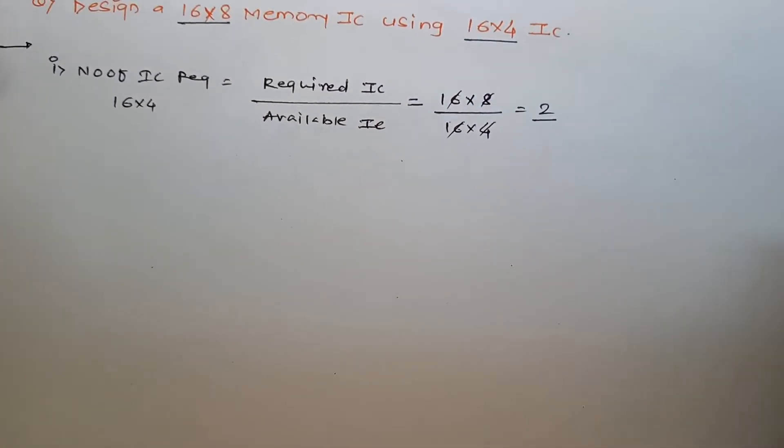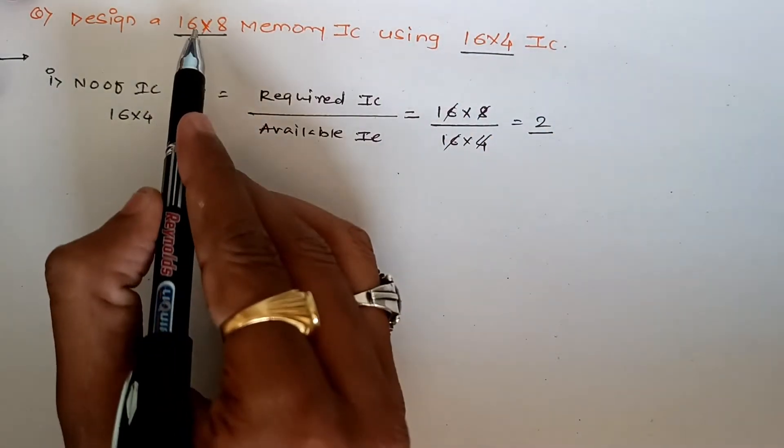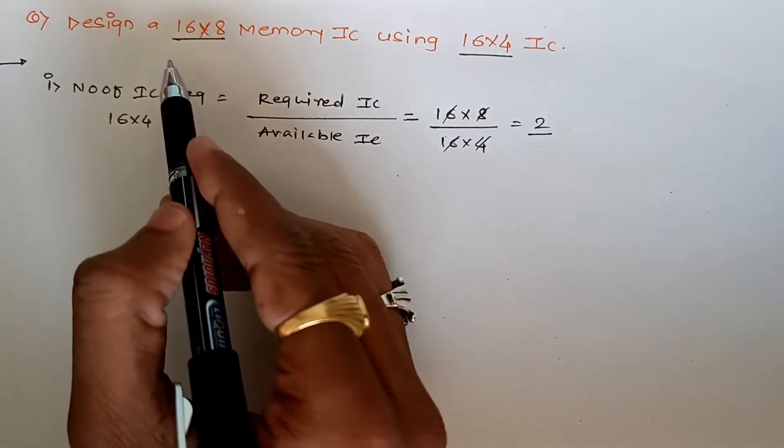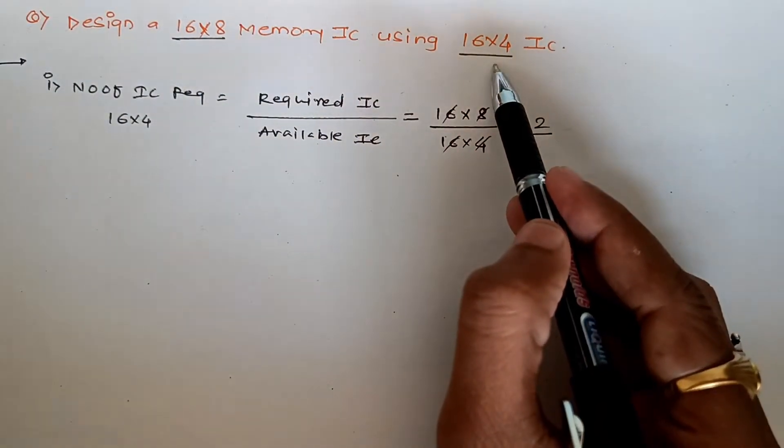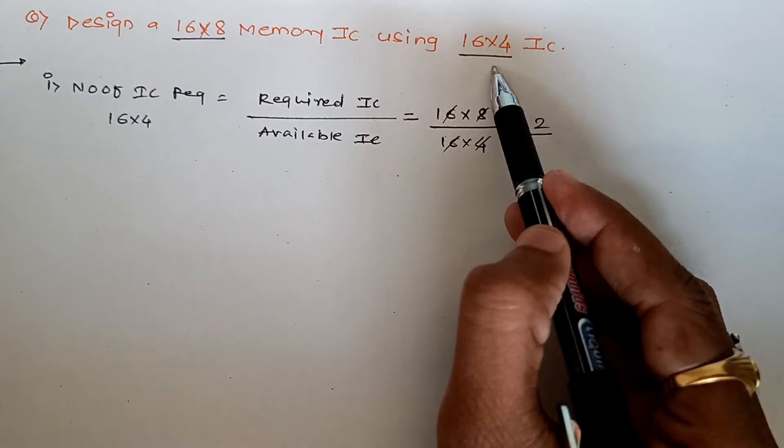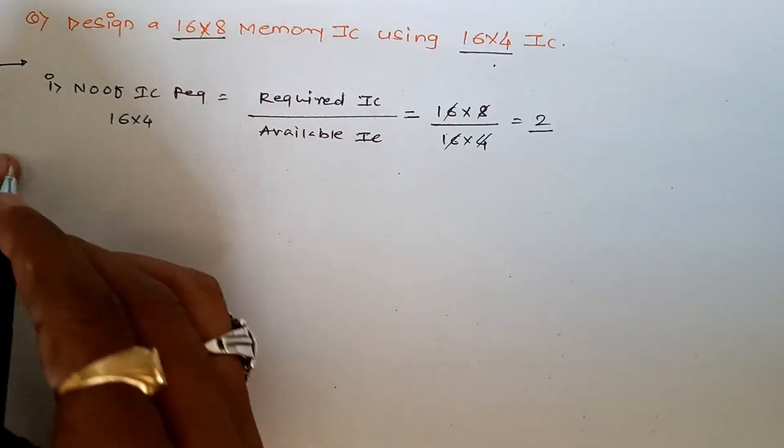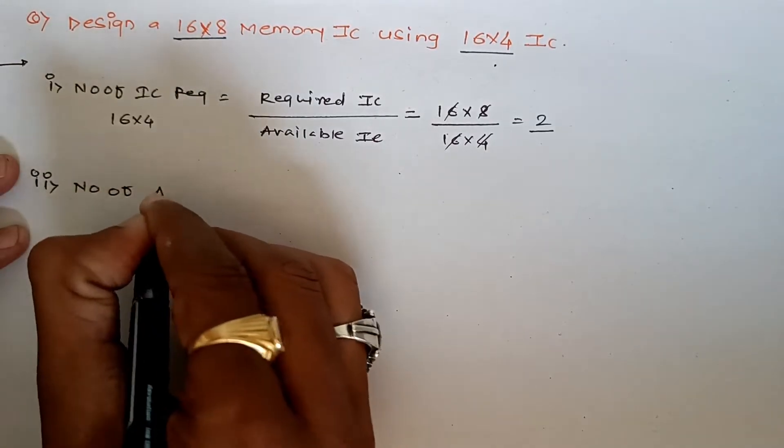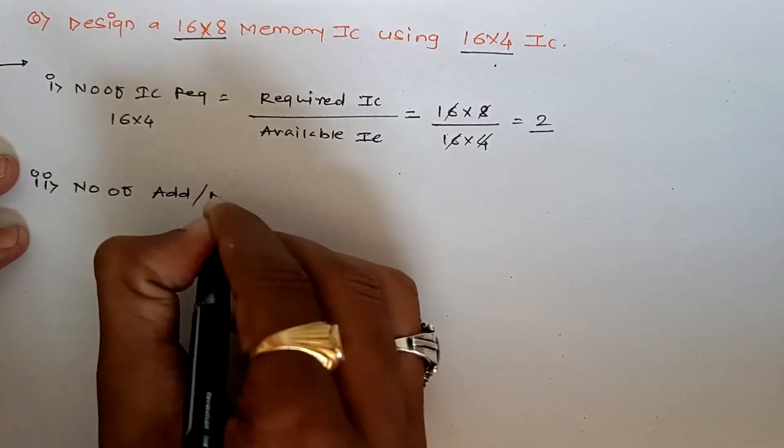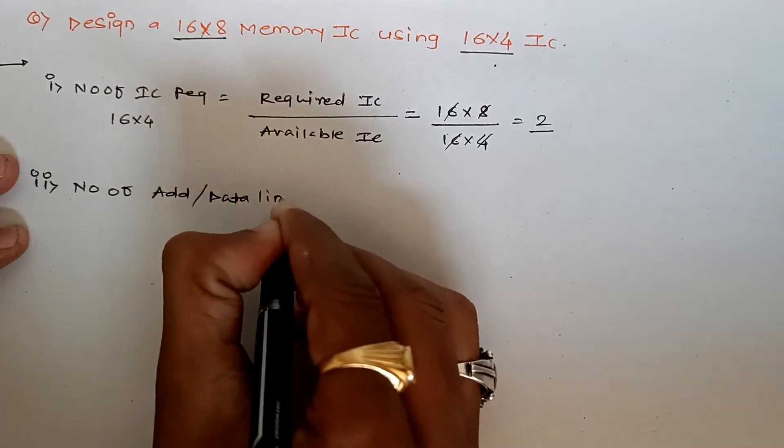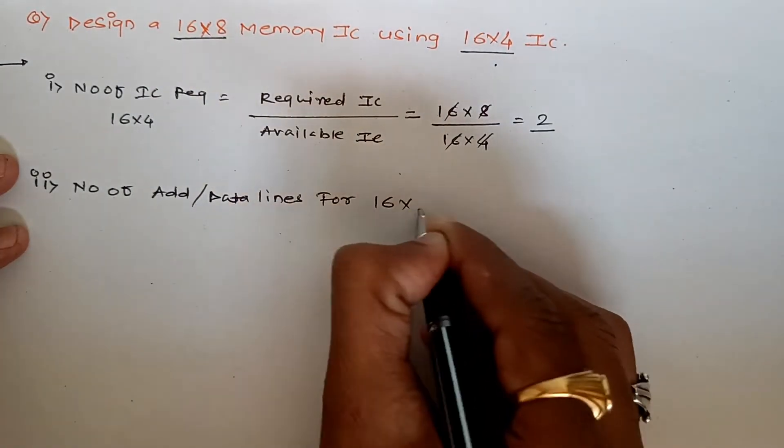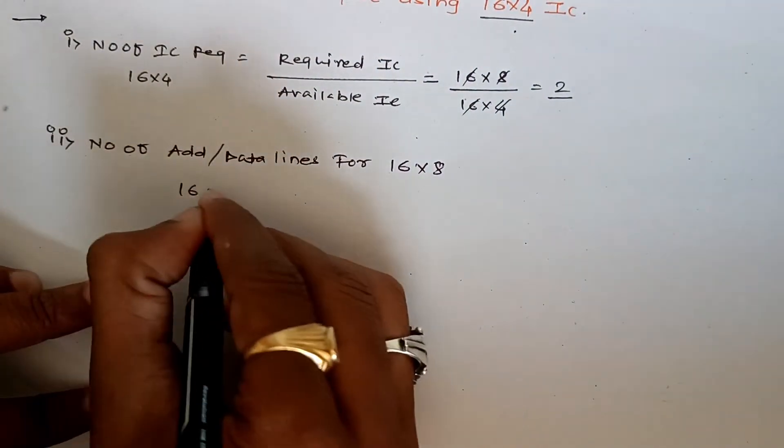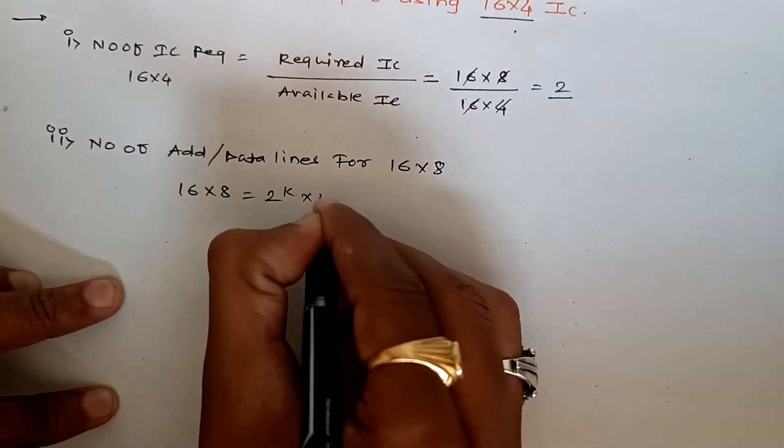Second step: if we have to design this IC, we need to determine how many address lines and data lines are required. And since we'll use 16 by 4, we also need to determine how many address and data lines it has. For 16 by 8, we'll use the same formula: 16 by 8 equals 2^k by n.